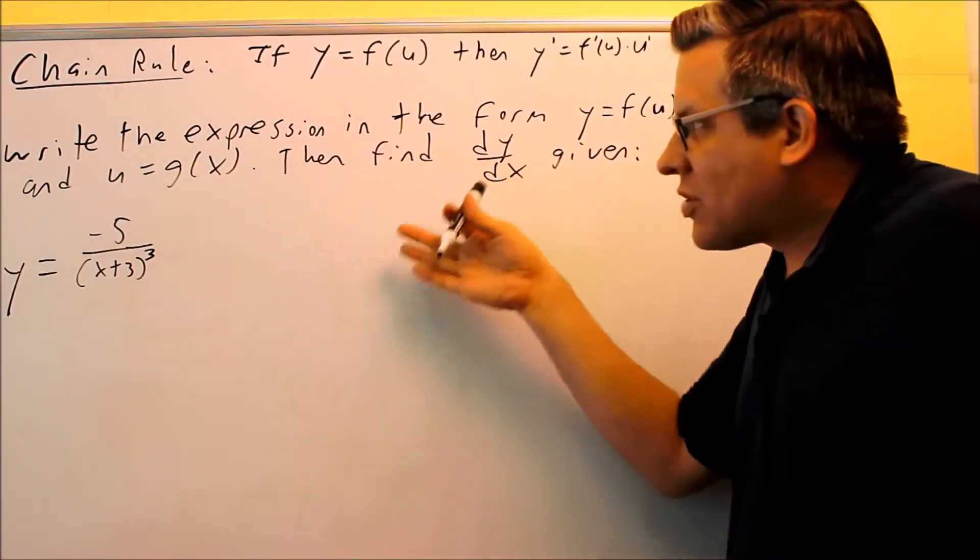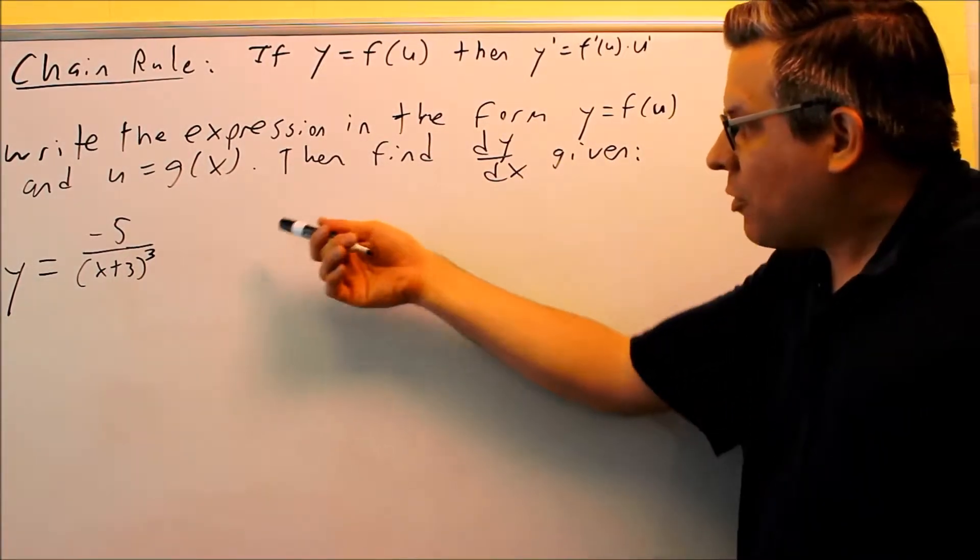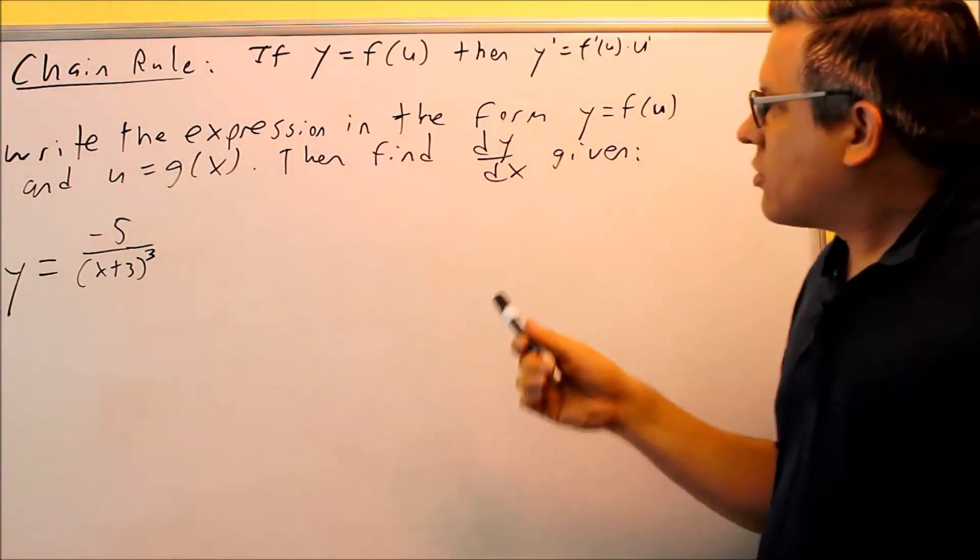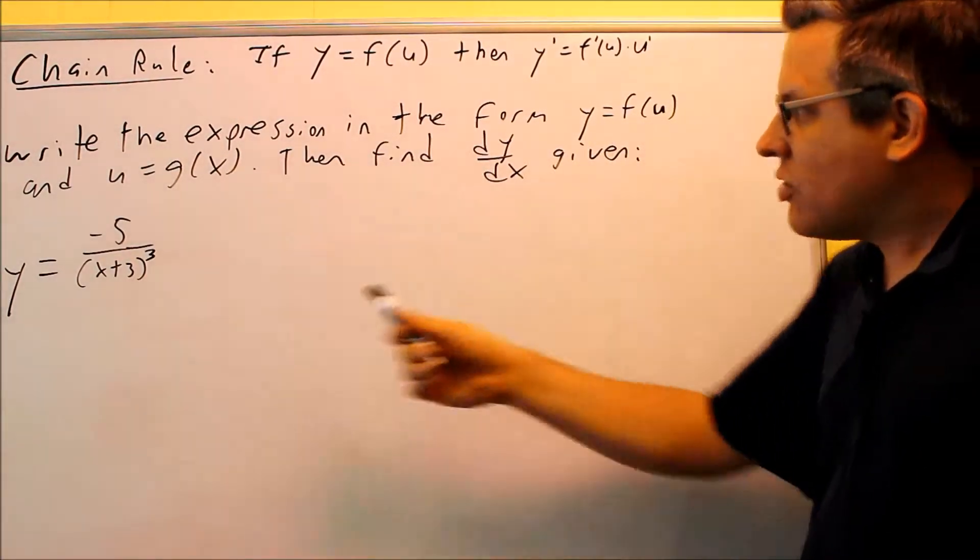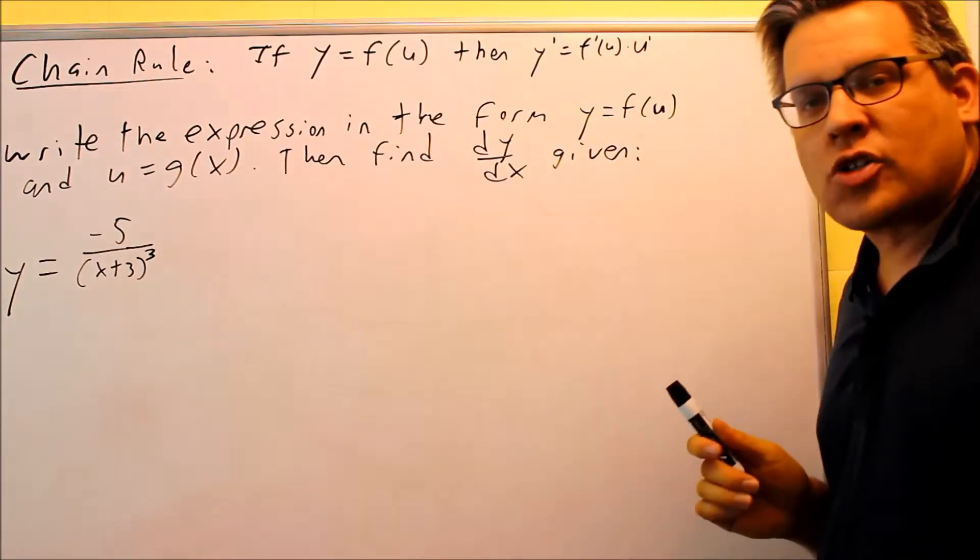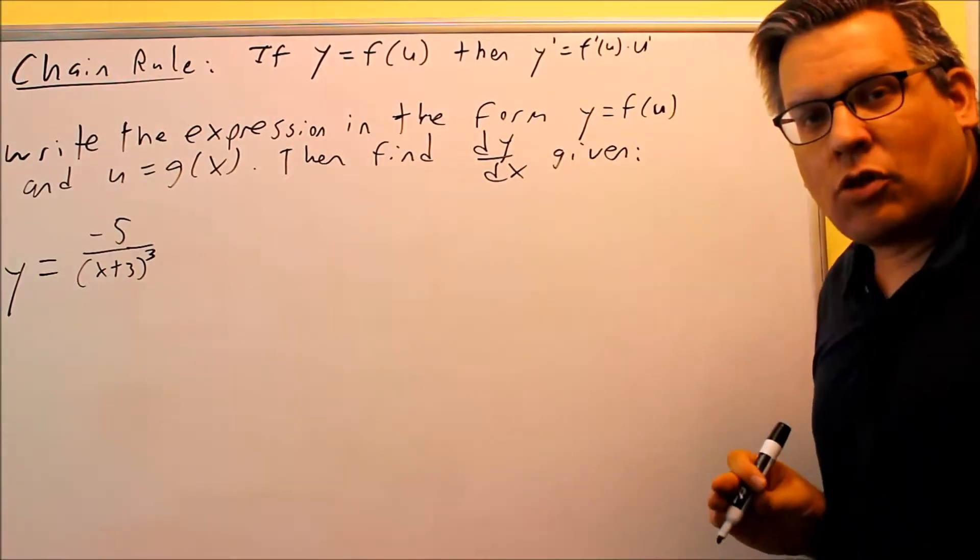So I have a problem here that's going to help illustrate the chain rule idea, how it works. For this problem, we want to write the expression in the form y equals f of u, so we want to identify what the outside function is and what the inside function is, and once we do that, then we're going to take the derivative and we're going to use the chain rule.